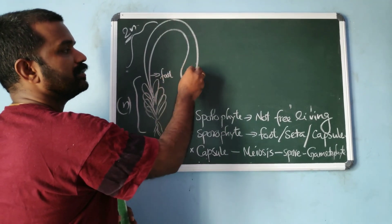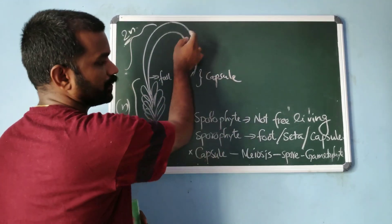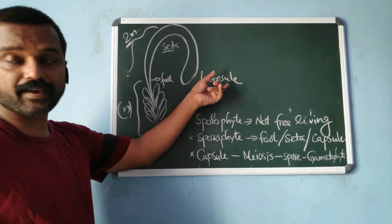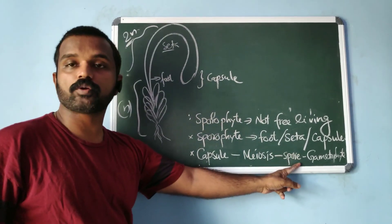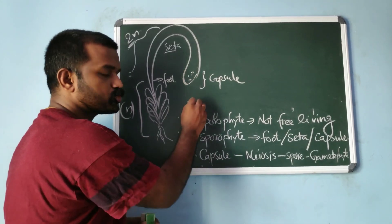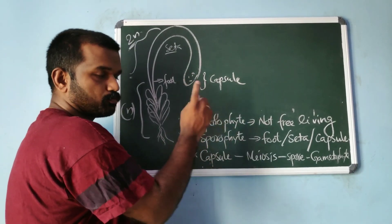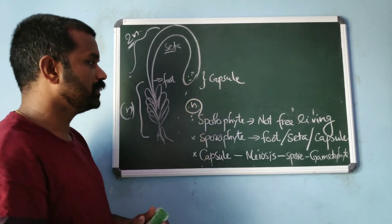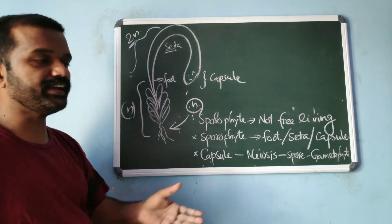Within the capsule, meiosis takes place during spore formation, and the spores are released into the soil. Spore formation takes place through meiosis, so the resultant product is a haploid spore. This haploid spore develops to form a free-living gametophyte.